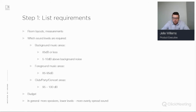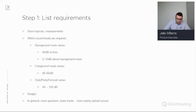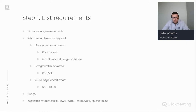For background music areas, we advise around 85 dB or less — always 5 to 10 dB above background noise. For foreground music areas, 85 to 95 dB. For club, party, and concert areas, 95 to 100 dB. Note there are country-specific limitations — for example in Belgium the limit for club and concert areas is around 100 dB. Also consider your budget: in general, the more speakers you add, the more evenly sound is spread and the lower the level required per speaker.